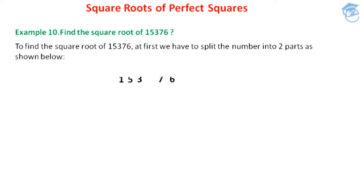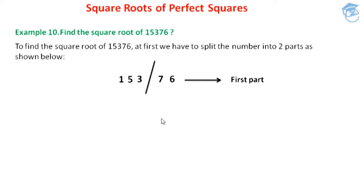I am writing the number 15376 and with the use of a vertical bar, I am dividing this number into two parts in such a way that the last two digits, that is 7 and 6, should come in the first part and the remaining digits, that is 153, should come in the second part.